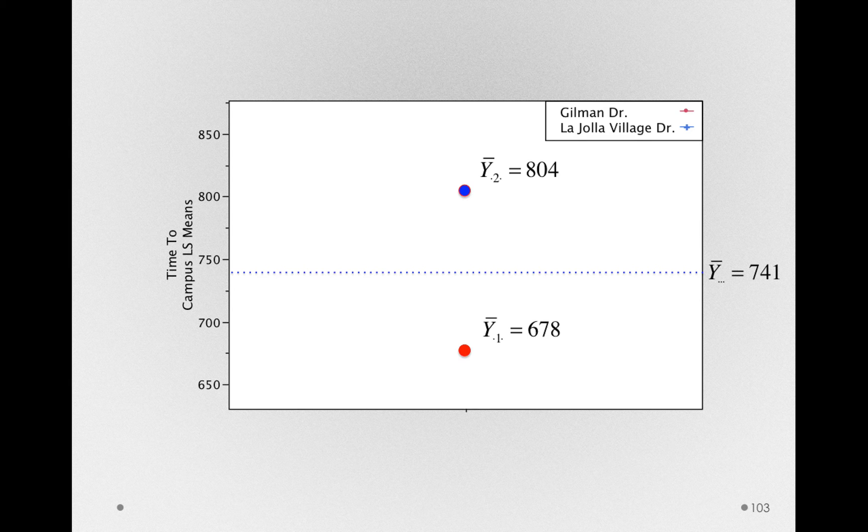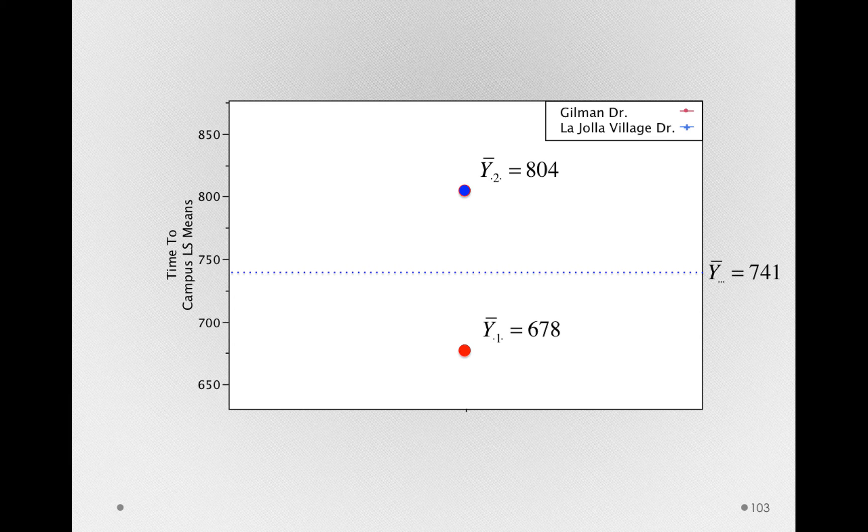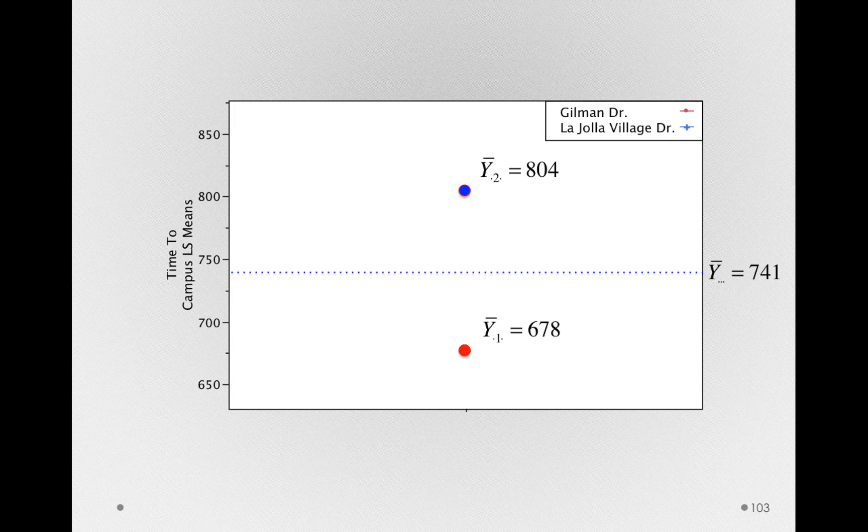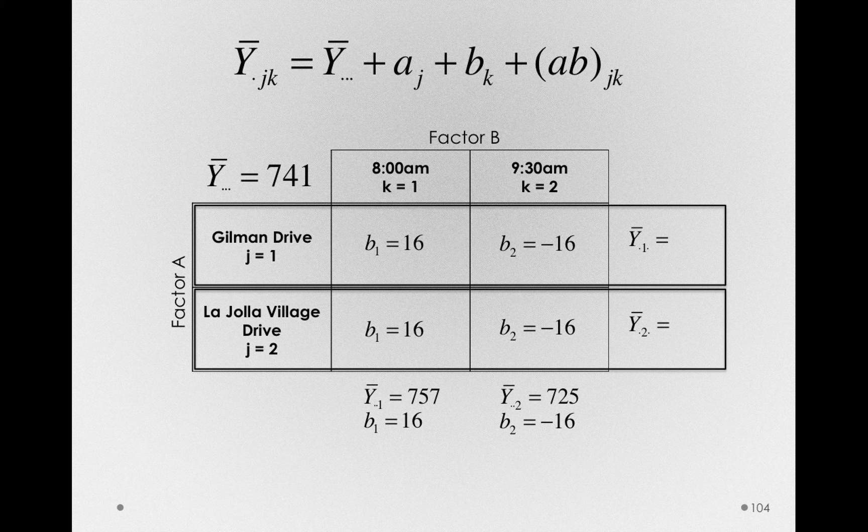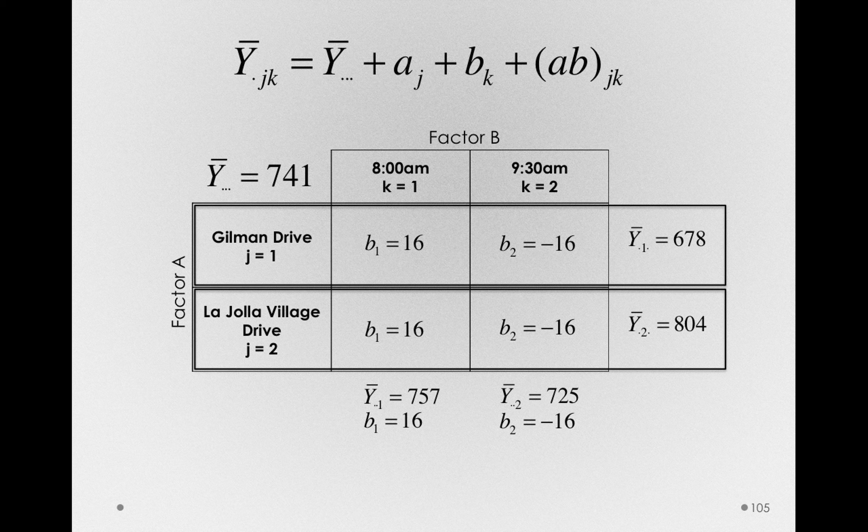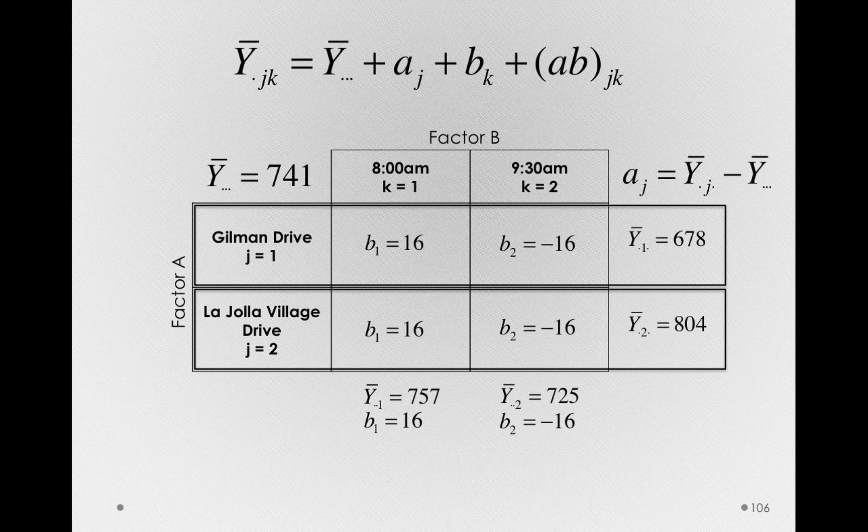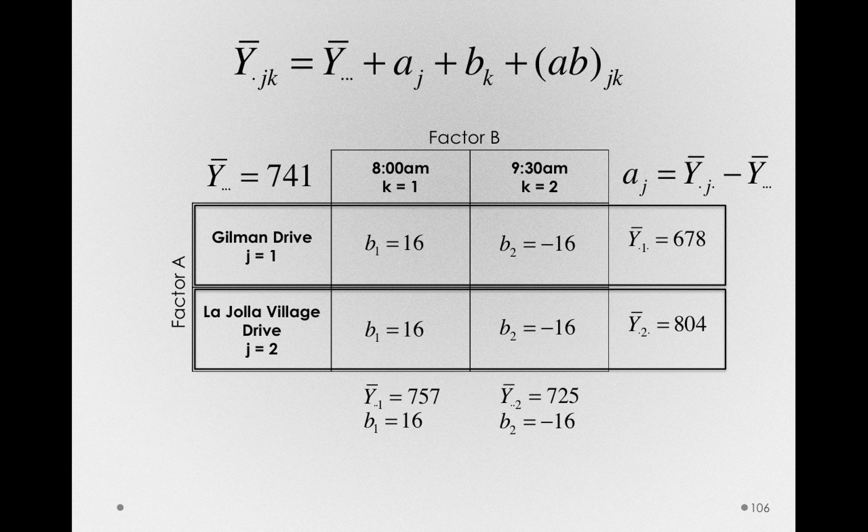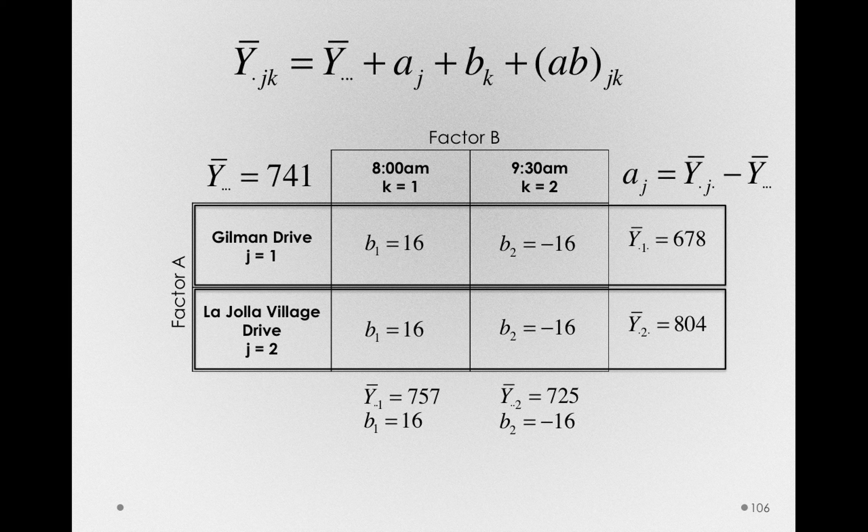So ignoring time of day, we simply have the marginal average. Y bar dot 2 dot is 804, and y bar dot 1 dot is 678. So we'll use these means to find the values of A1 and A2. Let me put in the marginal means for Gilman Drive and La Jolla Village Drive, and let's remember what calculation will apply. The A sub J in our model is simply the difference between the marginal mean for each of the different routes minus the grand mean.